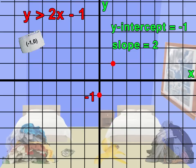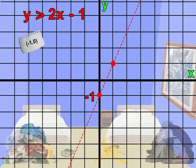The inequality is only greater than, and does not include greater than or equal to. So that means we draw a dotted line, not a solid line.